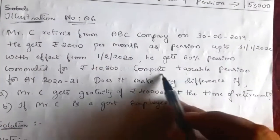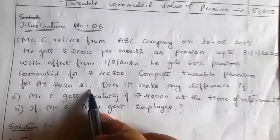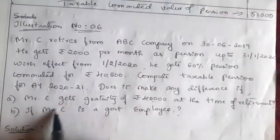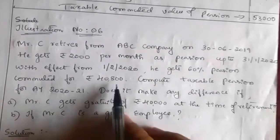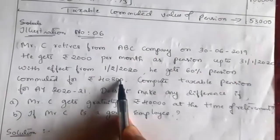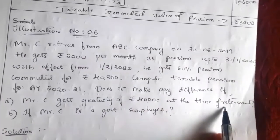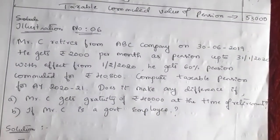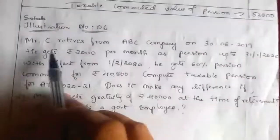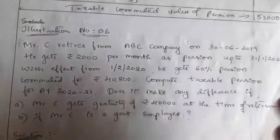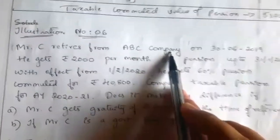We have to compute taxable pension for assessment year 2020-21 in three cases: first, assuming he has not received gratuity; second, if he gets gratuity, what is the treatment; and third, if he is a government employee. Mr. C retires from ABC Company, which is a non-government, private company.